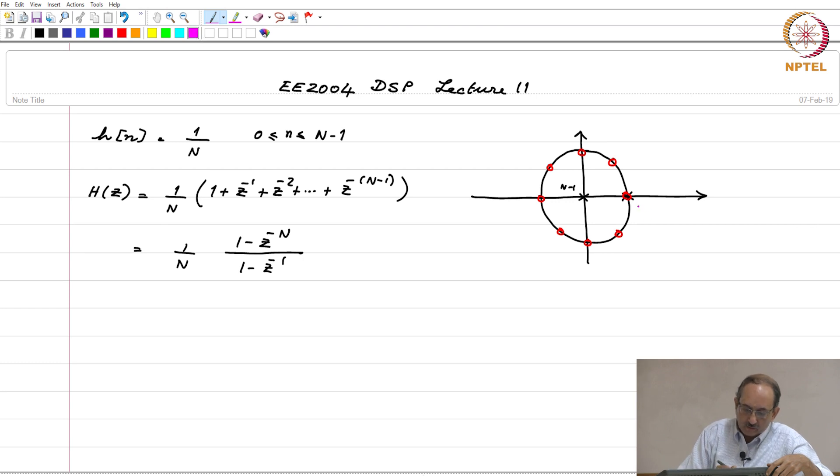We pointed out that at z equal to 1, there is a pole-zero cancellation.